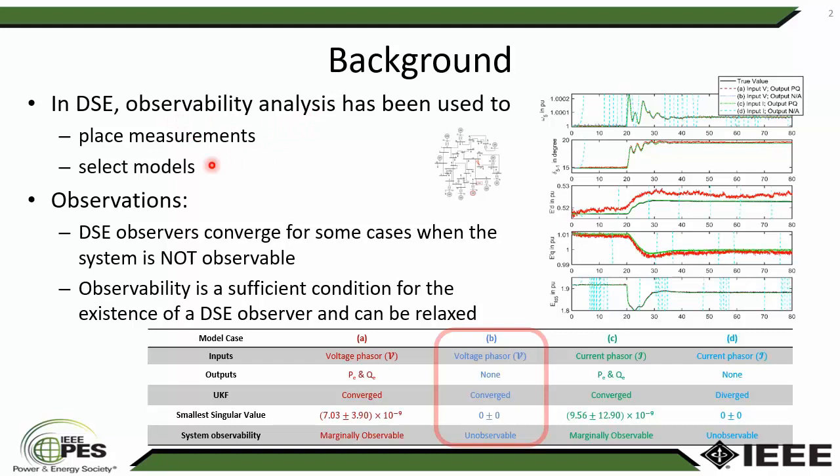We set up four different scenarios, but what surprised us is Case B. We set up Case B with no output measurements, which makes it unobservable. But when we observed the state estimation results, we found that Case B also converged to the true value.